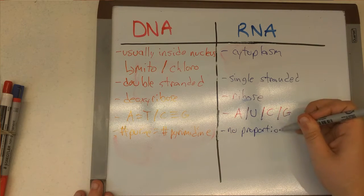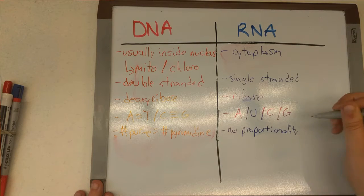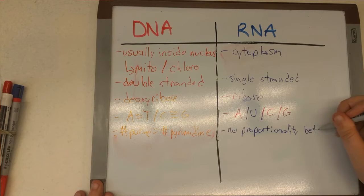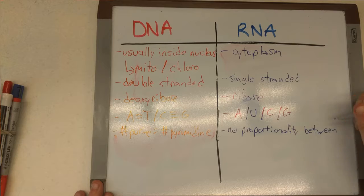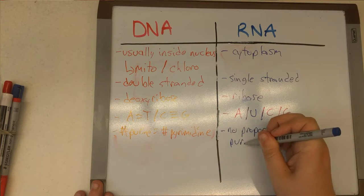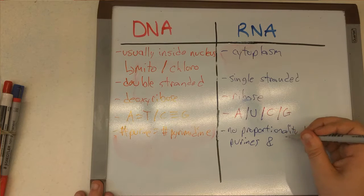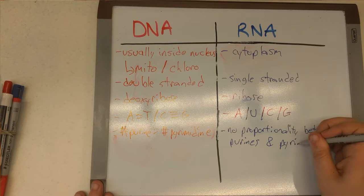In terms of RNA, there is no proportionality like there is in DNA, because RNA is single-stranded. So we just observe different amounts of these bases, and there is no relationship between one base to another.